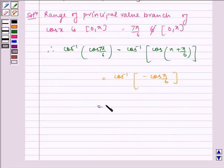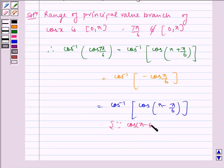Which is equal to cos inverse of cos of π minus π by 6, because cos of π minus theta is equal to minus cos theta.